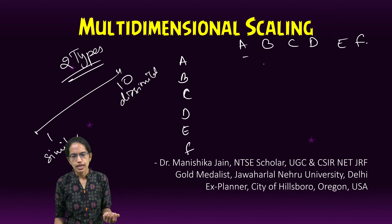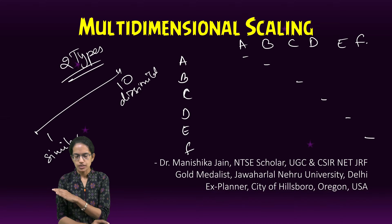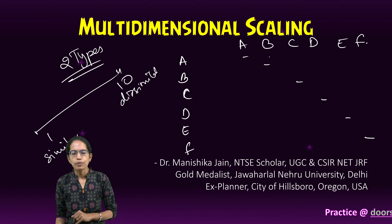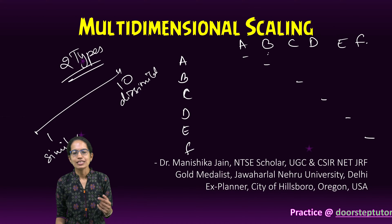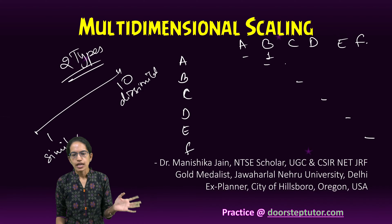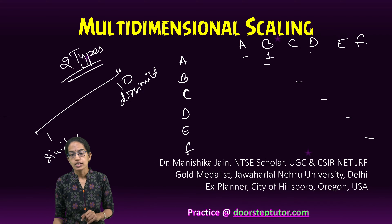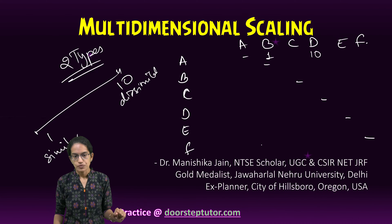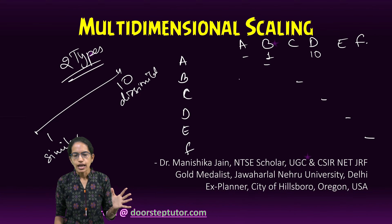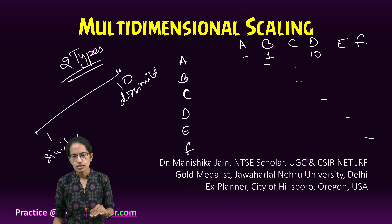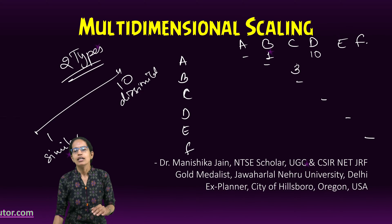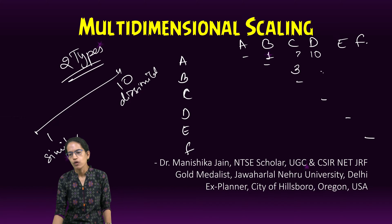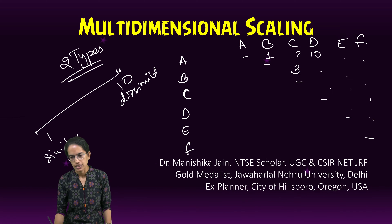So we compare each pair: A to B is very similar, so I say 1. A to D is very dissimilar, so I say 10. B to C is somewhat similar, so I say 3. And so on and so forth. I fill in all the values for the various pairs in the matrix.